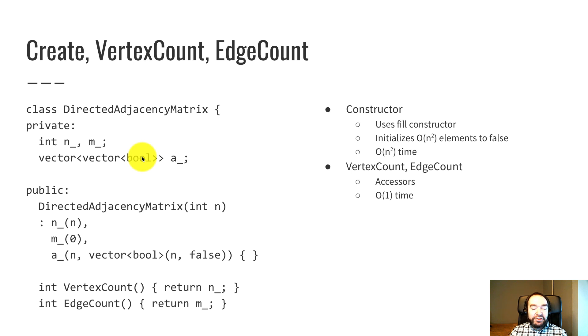And I'm calling it a to match the notation earlier in the presentation. So the constructor is given n, the number of vertices. We initialize the n data member to that n. And m starts out at zero because there are no edges yet. Those are pretty simple.